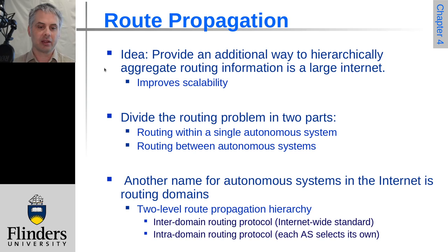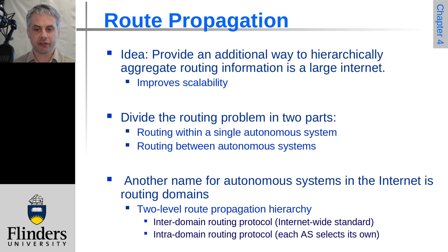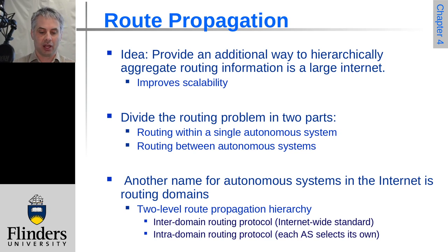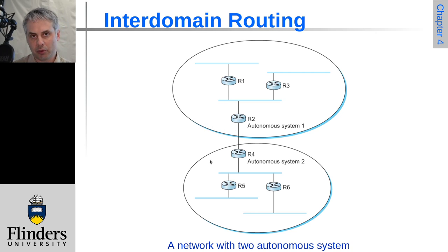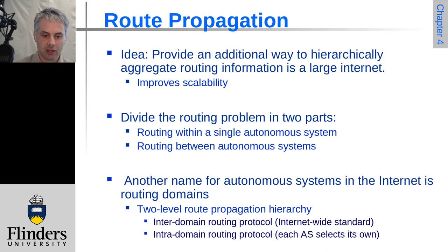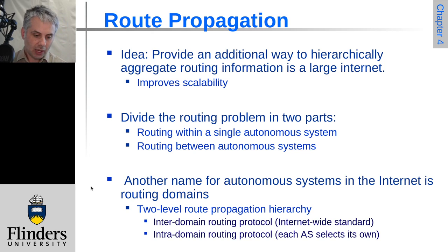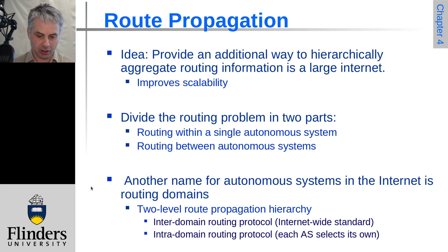The goal is to give some hierarchy to allow for abstraction through aggregation of routing information, and this abstraction improves scalability. You have an internal routing problem which is much simpler, and the autonomous system looks after that. Then it's only the connection of that autonomous system to the outside world that is the concern of the global routing system. So we have these two different routing domains.